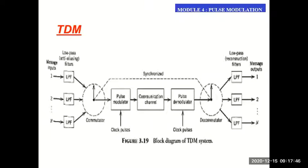We also saw how flat-top sampling can be achieved by first sampling using impulses — ideal sampling through impulses — and then extending that impulse sample for a short time duration by passing it through a system with impulse response h(t). That system, whether a filter or any system with impulse response h(t), converts the impulses into pulses.